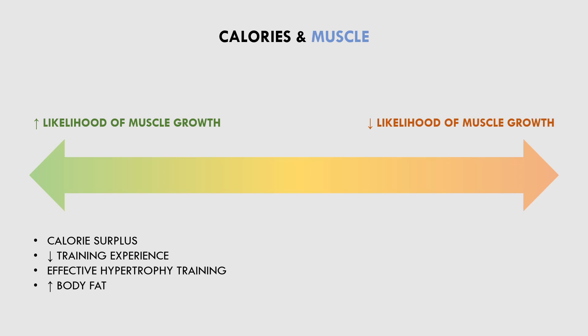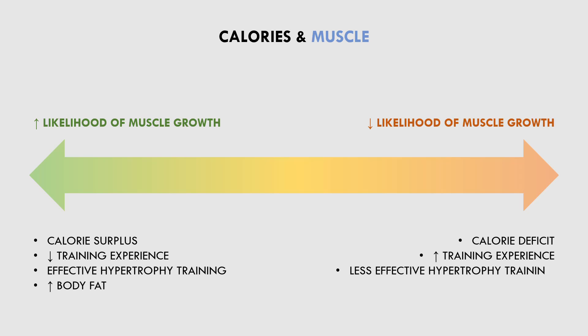Or our rate of muscle growth will be faster. On the other hand, if we eat in a calorie deficit, we are highly advanced lifters, our training program is not very effective, and we are very lean, then our chance of gaining muscle is very low, and we are probably more likely to lose some muscle mass. So ultimately, changes in muscle size are highly dependent on many different variables. However, to maximize the rate of muscle growth, a calorie surplus is recommended.